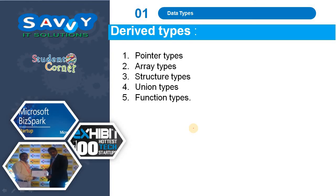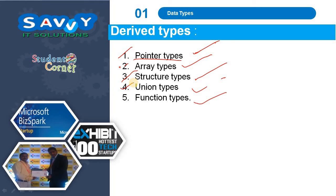The next category is derived datatypes. They include pointer types, array types, structure types, union types, and function types. A pointer is a memory location that holds the address of another variable. An array is a homogeneous collection of data. Structure and union are similar but memory allocation is different; they are defined as a heterogeneous collection of data. A function is similar to a program — it is a set of instructions to solve a particular problem.